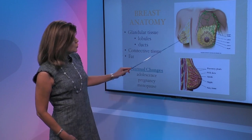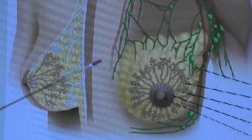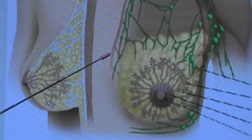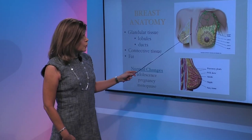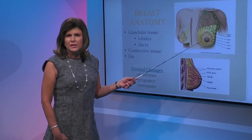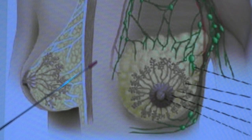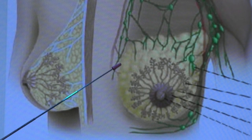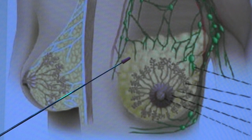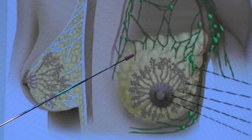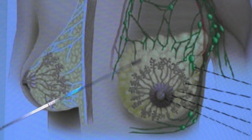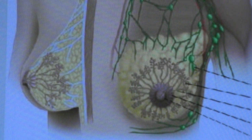We have the glandular tissue, which is made up of the lobules and the ducts — this is the tissue where the milk is produced. The breast is divided into about 15 to 20 segments; each of these segments contains lobes, which contain lobules, and these are the milk-producing glands. Once the milk is produced, it travels through passageways or ducts that all converge in the nipple as they exit through the breast.